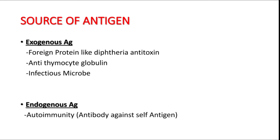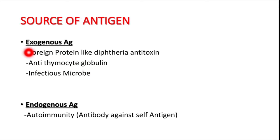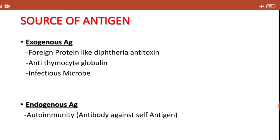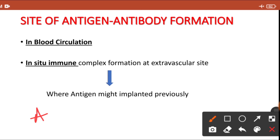Which could be the source of antigen in this hypersensitivity? The source of antigen could be exogenous or endogenous. Exogenous means outside the body, like foreign protein injection, diphtheria antitoxin injection, antithymocyte globulin injection, or because of some microbial infection. Endogenous antigens could be our own cells — if antibody forms against our own antigen then it is known as autoimmunity.